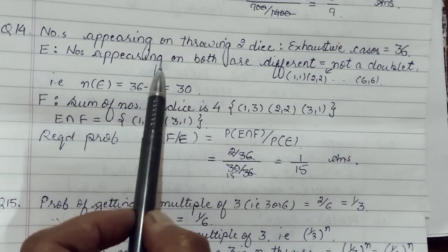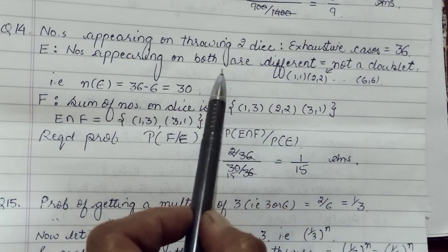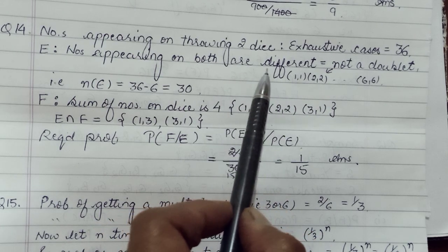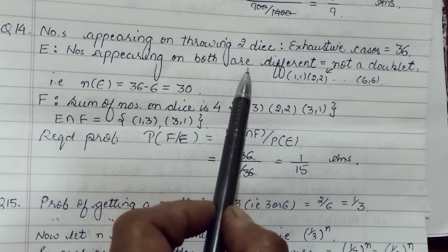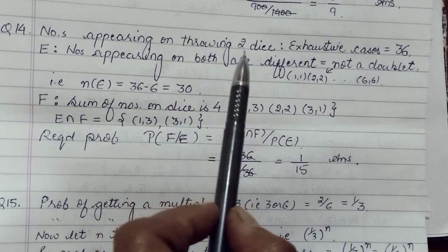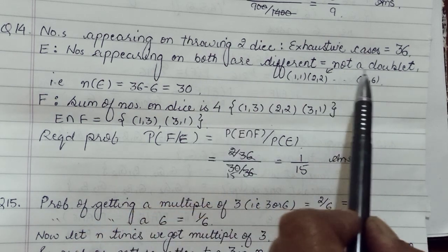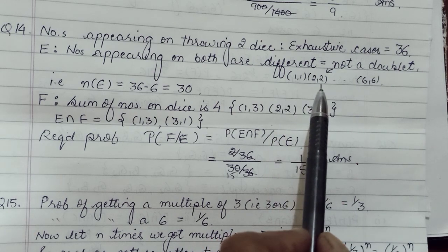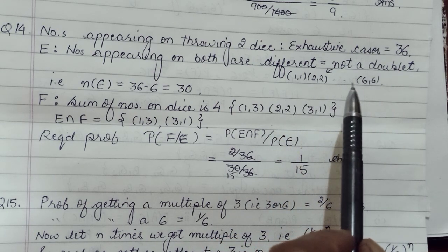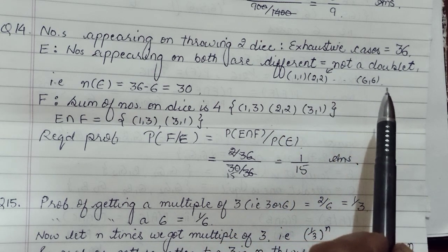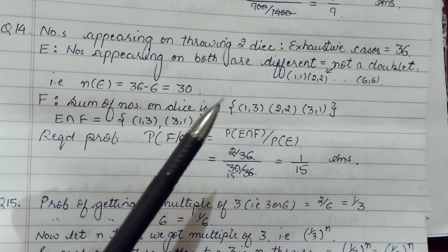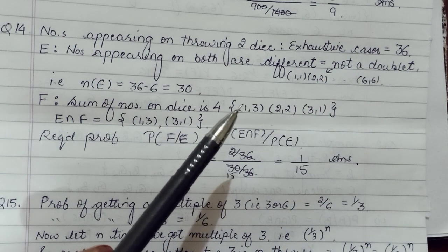The two important events here are: first, the numbers appearing on both the dice are different — meaning they are not a doublet. Doublets like (1,1), (2,2), (3,3), (4,4), (5,5), (6,6) are excluded. Out of 36 total outcomes, 6 are doublets. So if event E represents both entries being different, 30 outcomes are favorable to E.